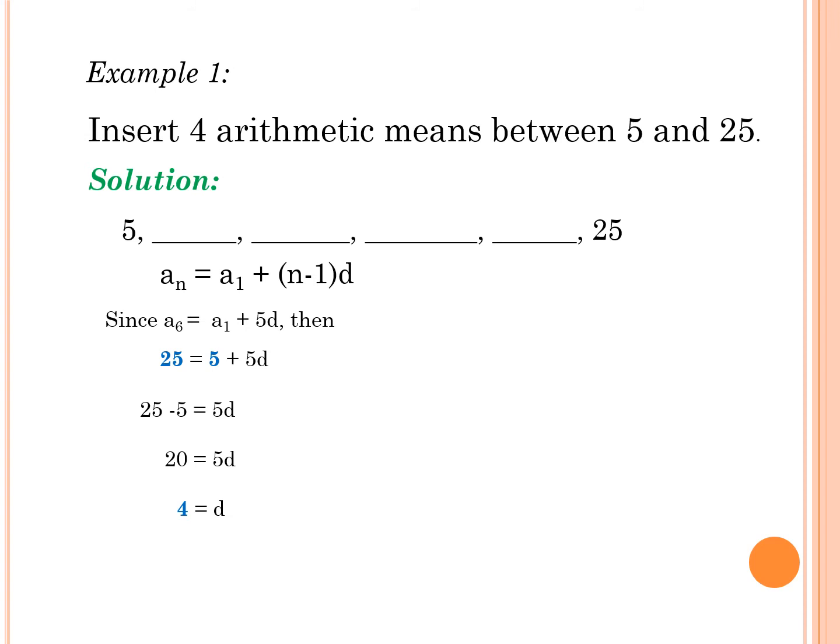Since our difference is equal to 4, then we know what number must be added from the first term. So let's do it now. Since d is equal to 4, then 5 plus 4 is 9, 9 plus 4 is 13, 13 plus 4 is 17, 17 plus 4 is 21, and 21 plus 4, voila, we have 25 on the last term. Now, what are the 4 arithmetic means? The 4 arithmetic means are 9, 13, 17, and 21.